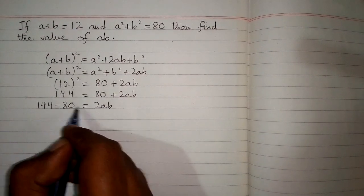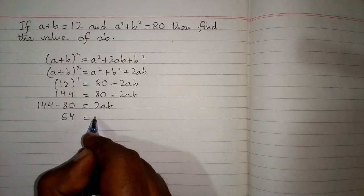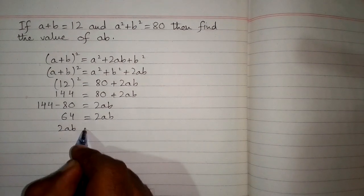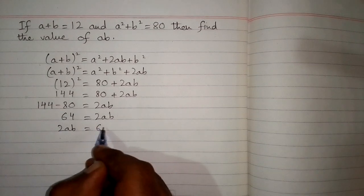144 - 80 = 64, so we have 64 = 2ab, or we can write 2ab = 64.